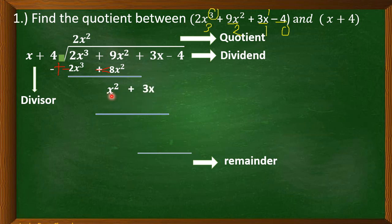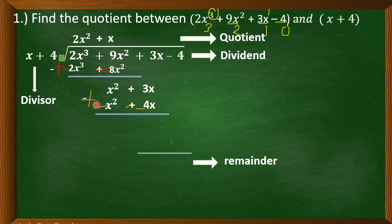Bring down 3x. Divide x squared by x — that equals x. Multiply: x times x is x squared, and x times 4 is 4x. Now subtract — change the sign of every term in the subtrahend: x squared becomes negative x squared and 4x becomes negative 4x. Proceed to addition: x squared plus negative x squared equals 0, and 3x plus negative 4x equals negative x.